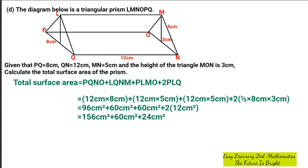Then we're going to add 156 plus 60 will give us 216 cm squared plus 24 cm squared. When we add 216 plus 24 cm squared will give us 240 cm squared.